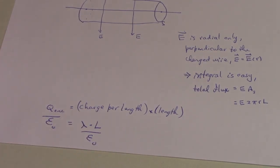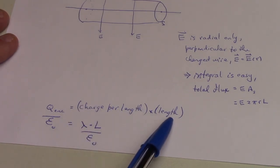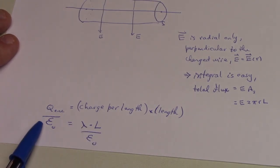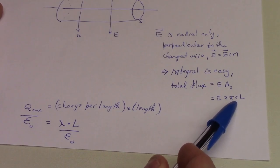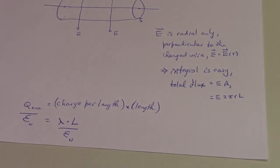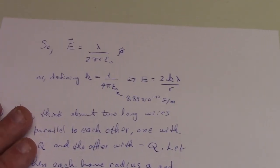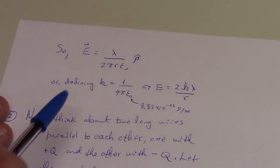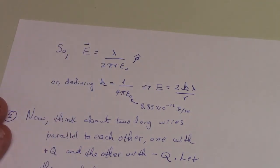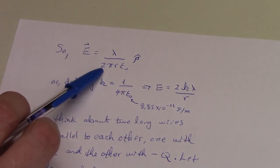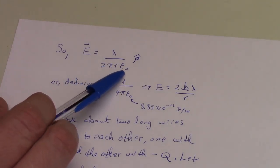The charge enclosed is just the charge per unit length, which we'll call lambda, times the length L. So the charge enclosed divided by epsilon naught is lambda L over epsilon naught, and that equals E times 2 pi r L. We now know that the electric field due to a single charged wire equals lambda over 2 pi r epsilon naught.